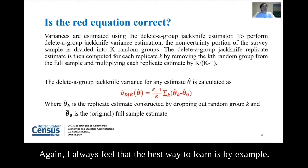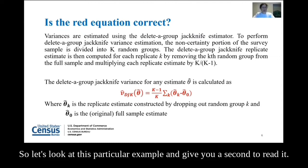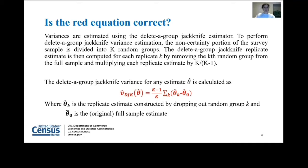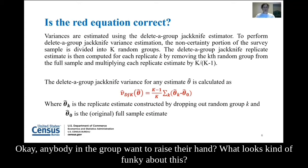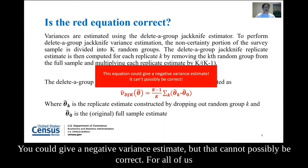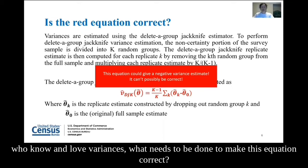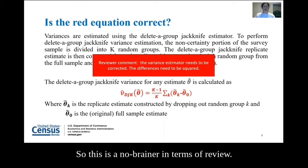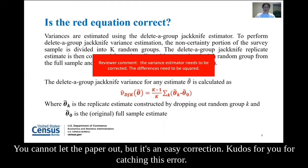I always feel the best way to learn is by example. So let's look at this particular example. Our question is: is this red equation correct? Well, look at that part on the right-hand side in brackets right here — it could give a negative variance estimate. It cannot possibly be correct. For all of us who know and love variances, the differences have got to be squared. This is a no-brainer in terms of review. You cannot let this paper out, but it's an easy correction. Kudos to you for catching this error.